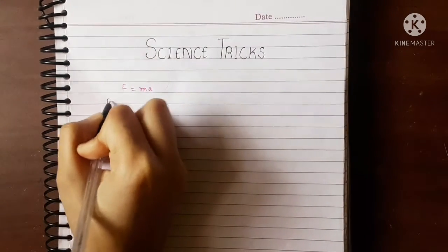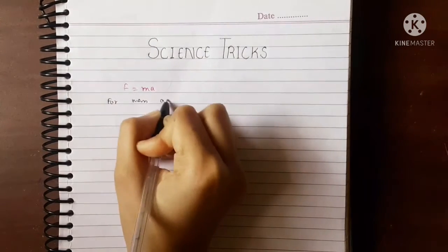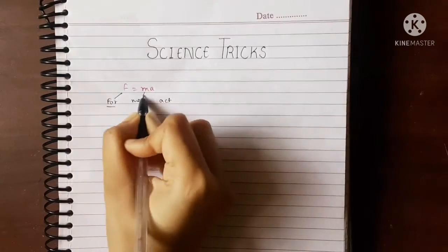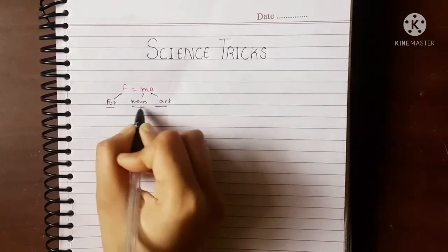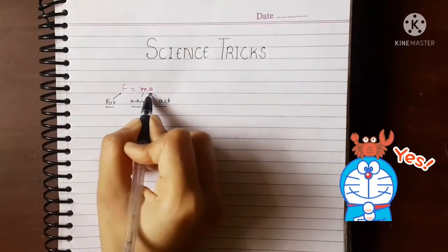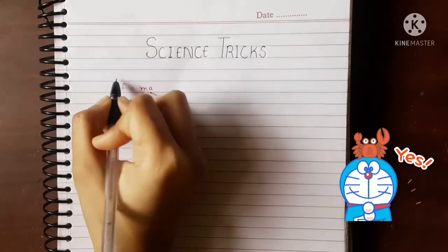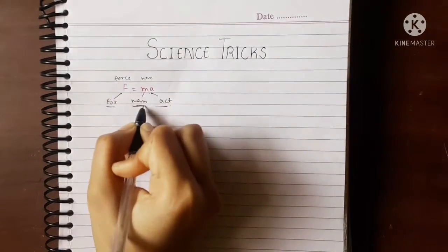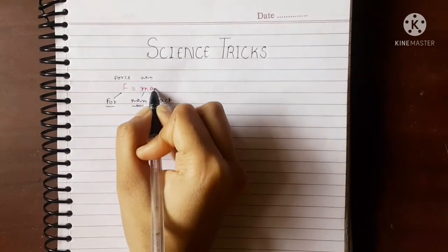F equals ma we can remember as 'for mass act'. F means for, m means mass, a means act. Here F represents your force, m represents your mass, and a represents your acceleration. This is the formula of force.